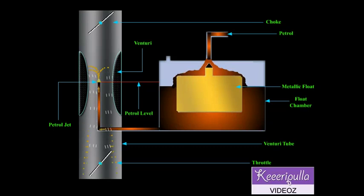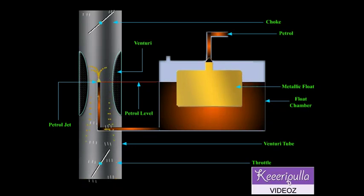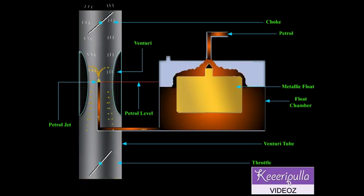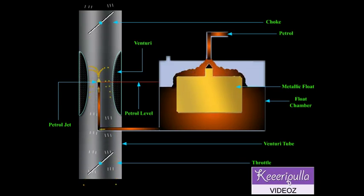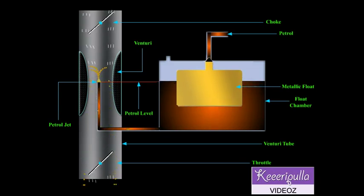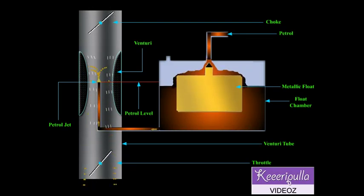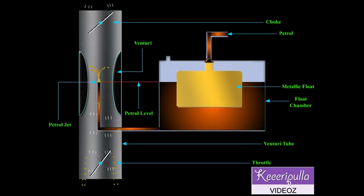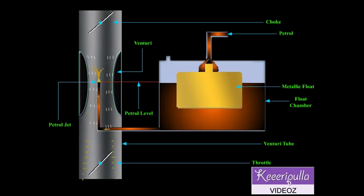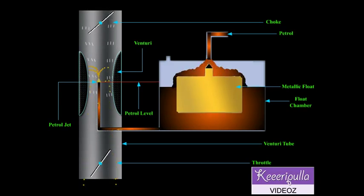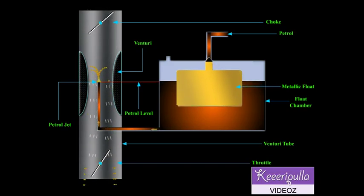At normal speed, the carburetor delivers a normal mixture of air fuel ratio approximately 15 to 1. The speed of the engine can be changed by controlling the amount of mixture by means of the throttle valve connected to the accelerator.